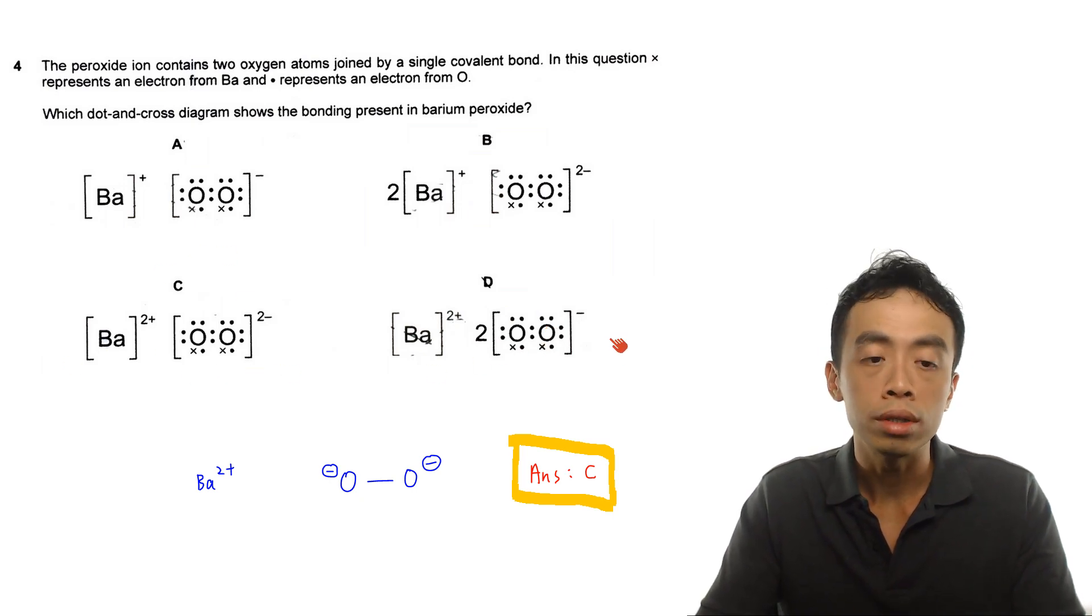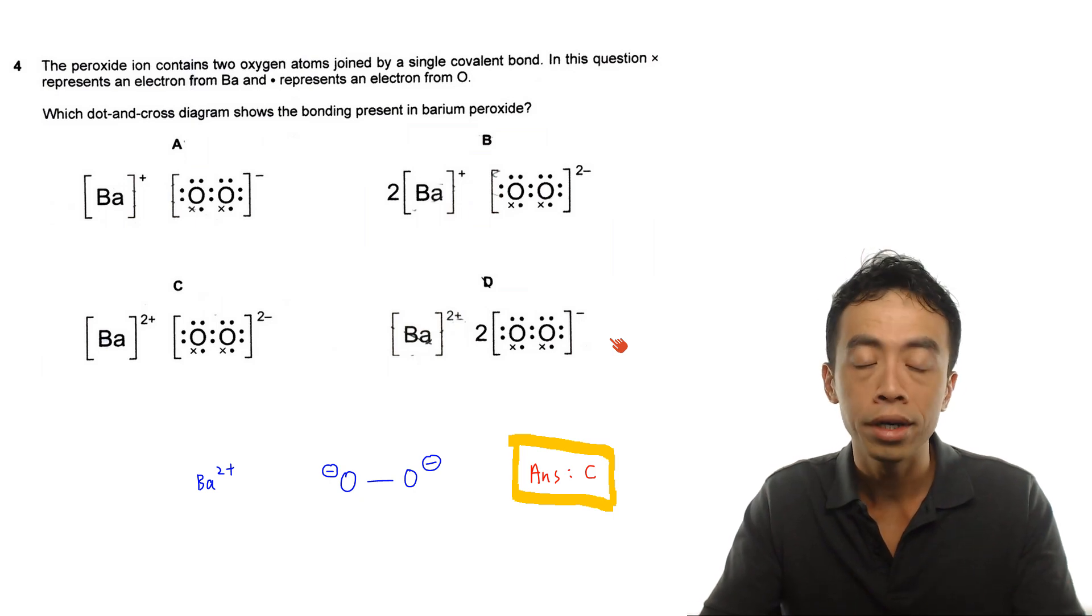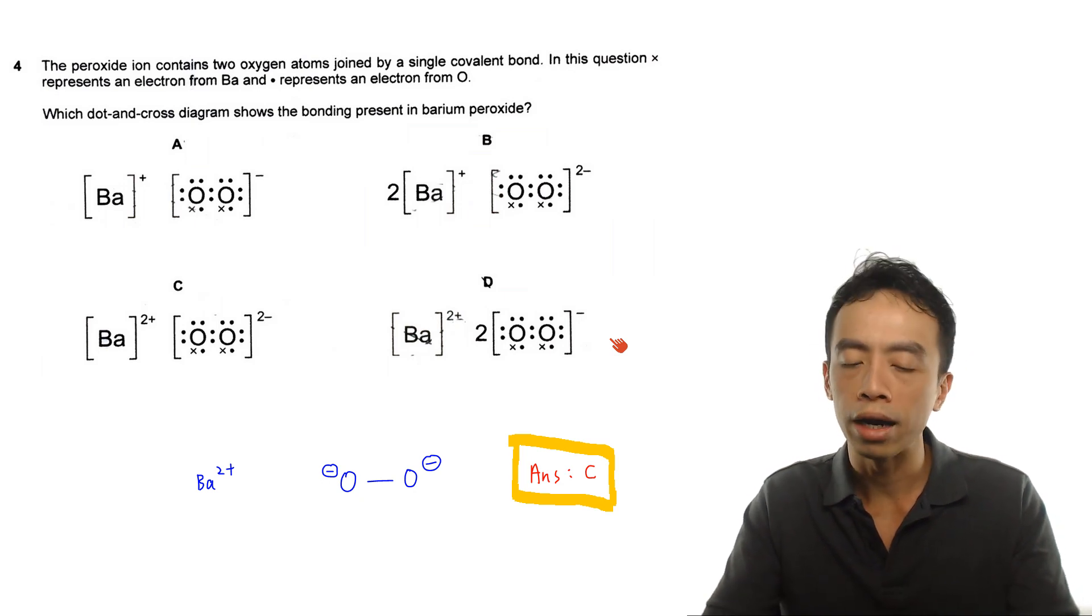So the answer to this question is actually pretty straightforward. It will have to be option C. And in principle, we should be familiar with both barium 2+, and peroxide. Peroxide, of course, we are more comfortable with hydrogen peroxide. And if I want to deduce the charge of the peroxide ion, we can actually try to link this from hydrogen peroxide.